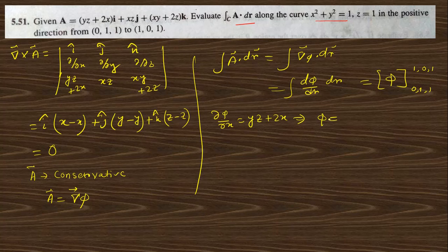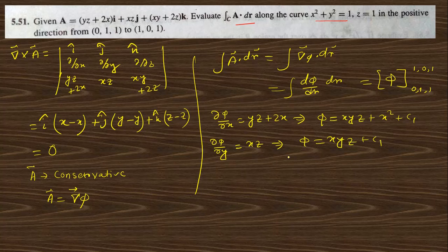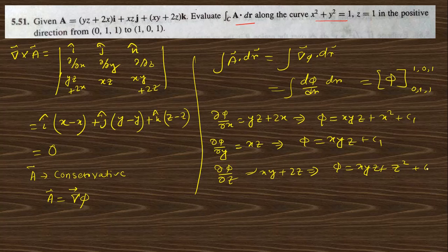Integrating del phi/del x = yz + 2x with respect to x gives phi = xyz + x², with constant c1. Similarly, del phi/del y = xz, so integrating gives phi = xyz again, with constant c2. And del phi/del z = xy + 2z, so integrating gives phi = xyz + z², with constant c3. The total phi can be written as xyz + x² + z² plus some constant.